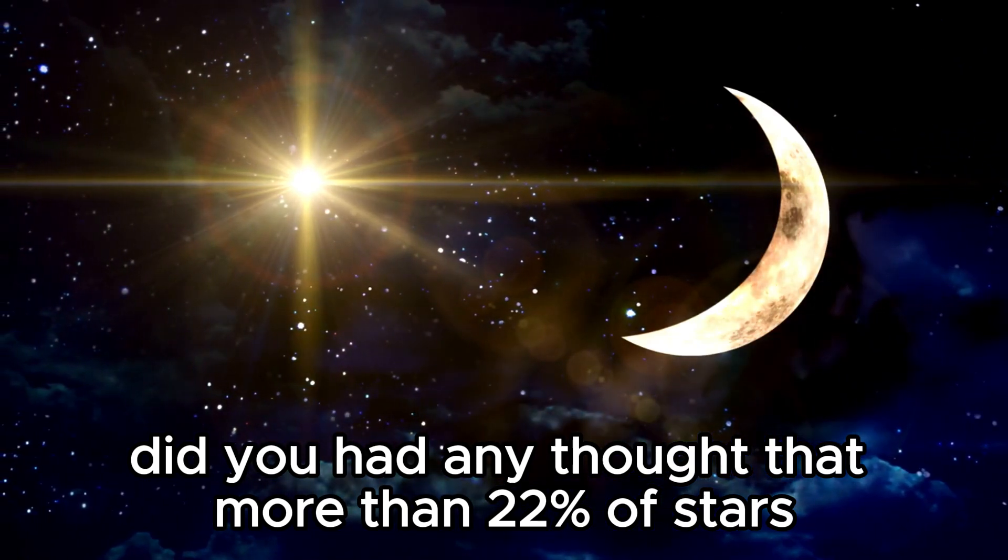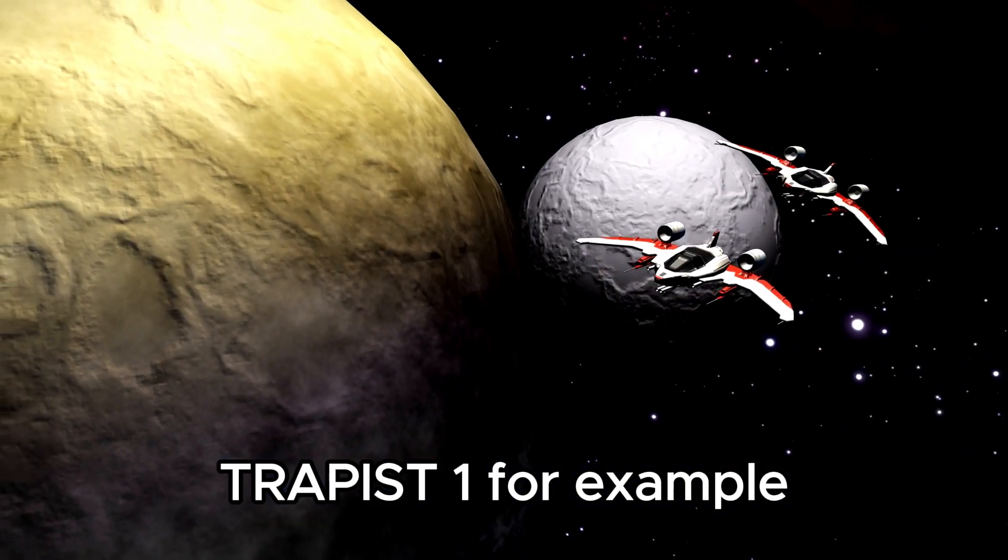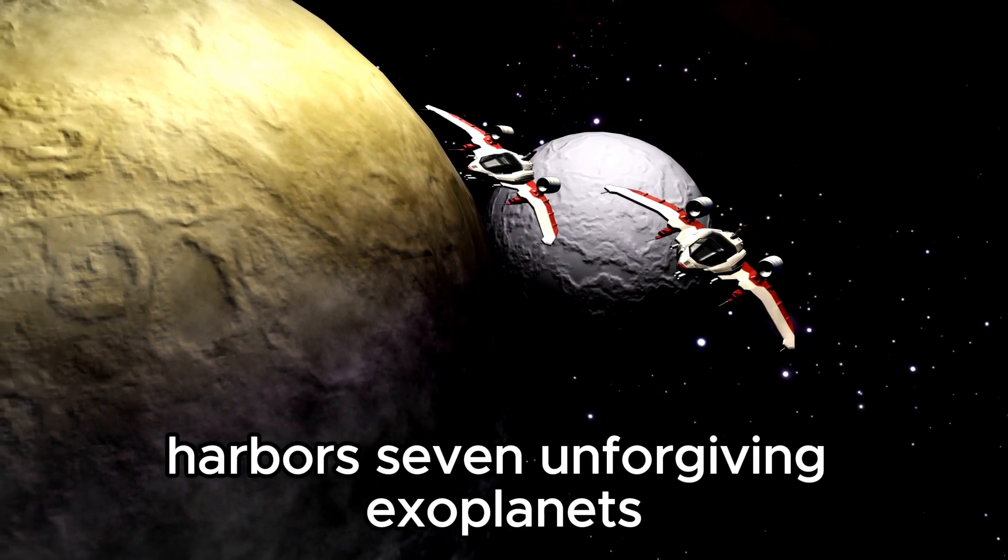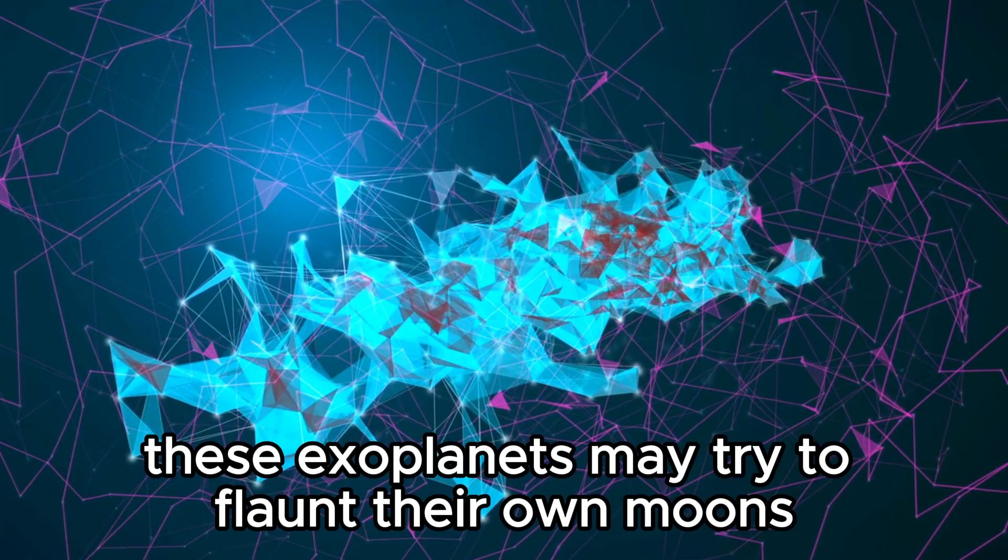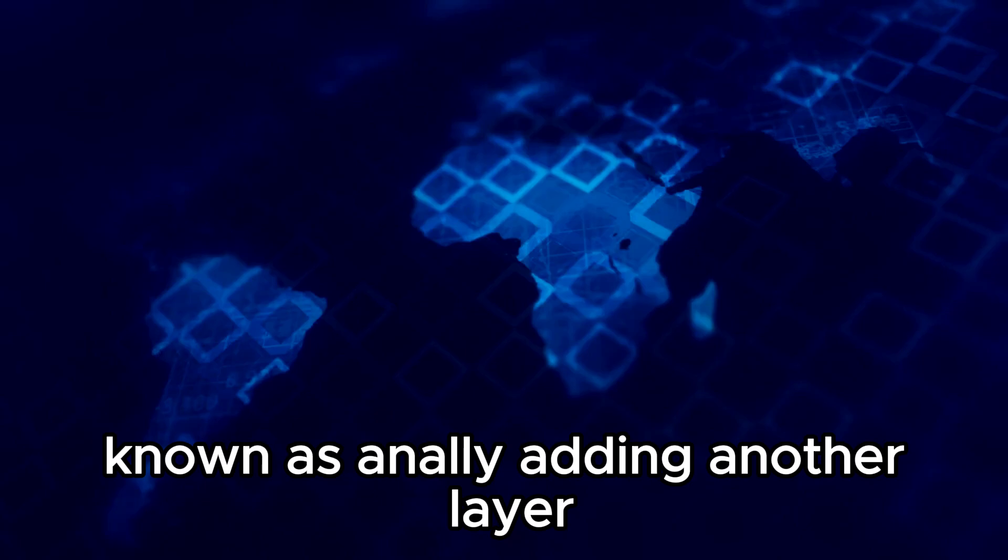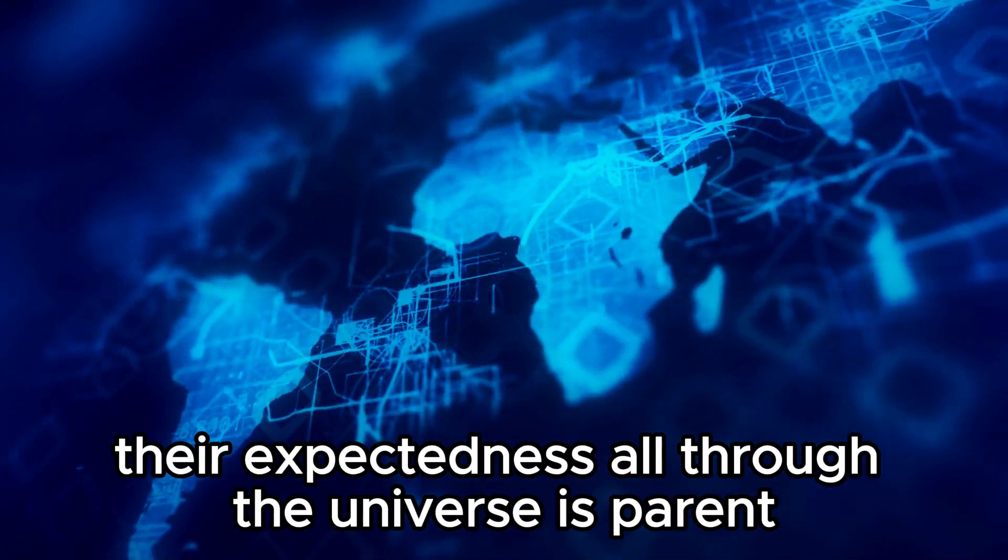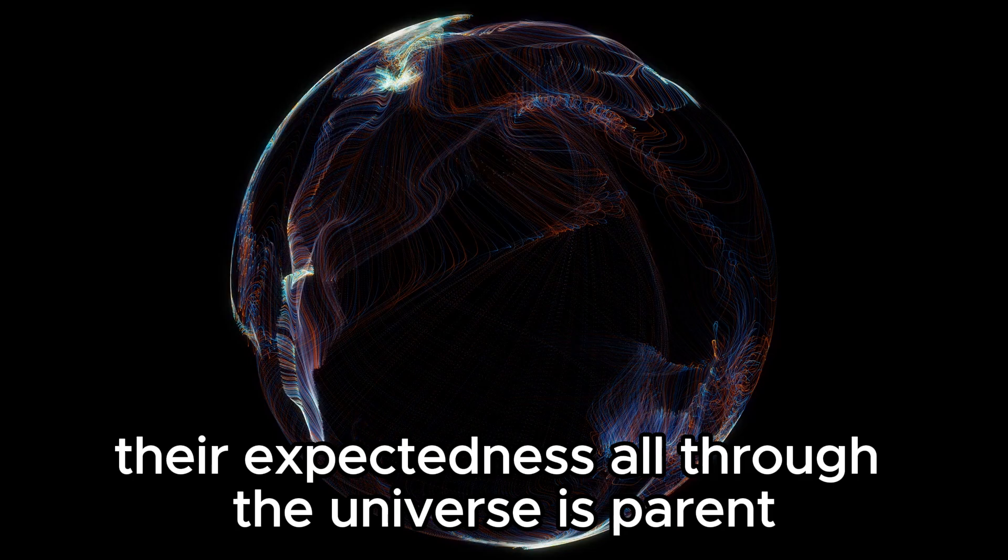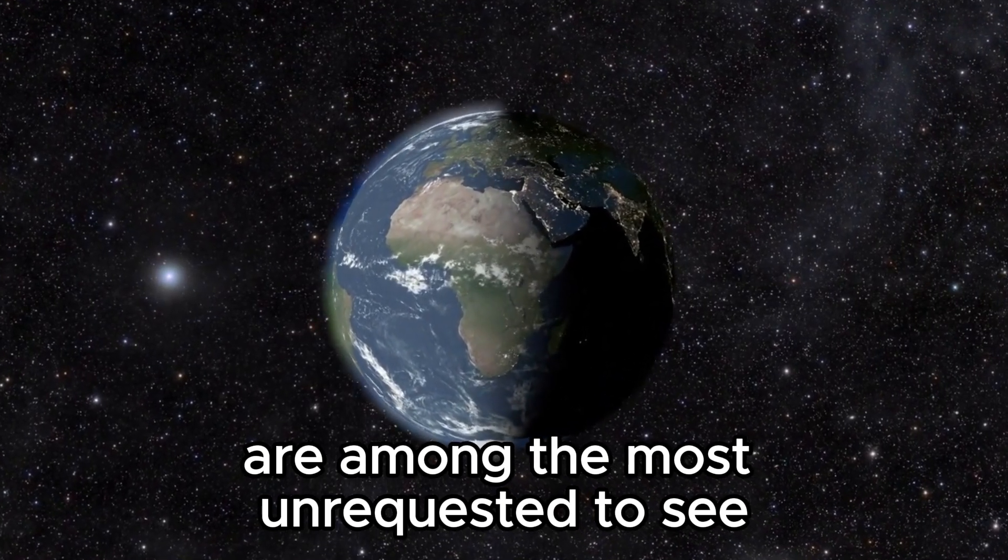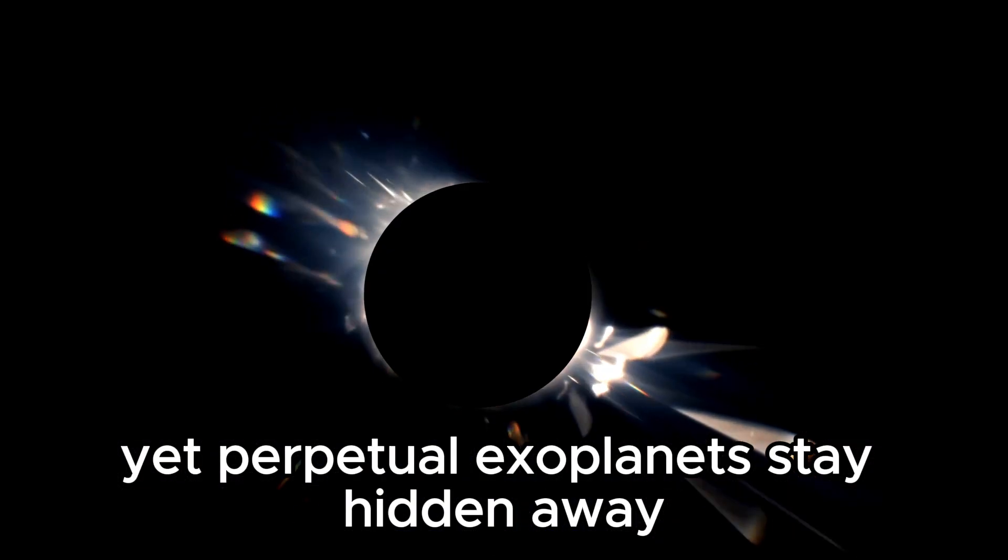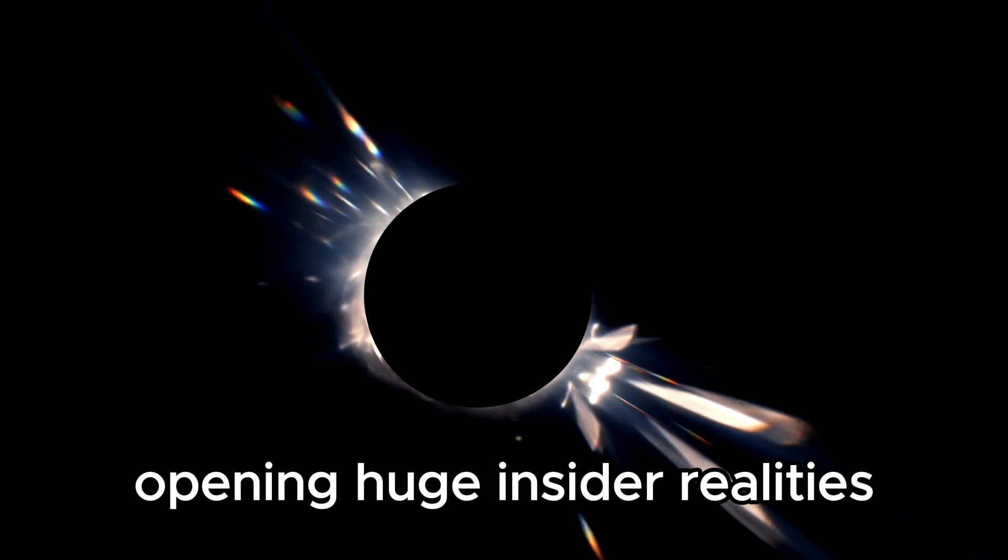Did you know that more than 22 percent of stars like our sun have Earth-sized planets in their habitable zones? TRAPPIST-1, for example, harbors seven rocky exoplanets, some potentially with surface water. With more than 4,000 exoplanets discovered to date, their prevalence throughout the universe is apparent. Hot Jupiters, with their enormous size and rapid orbits, are among the easiest to detect, yet countless exoplanets remain hidden.